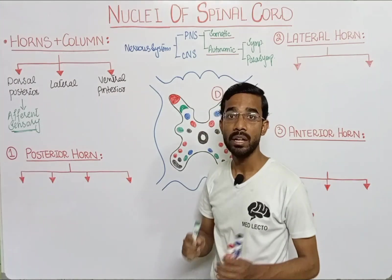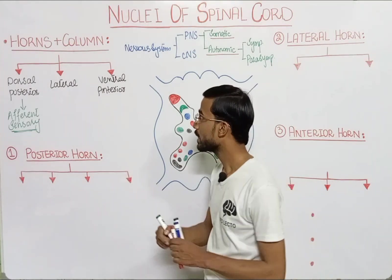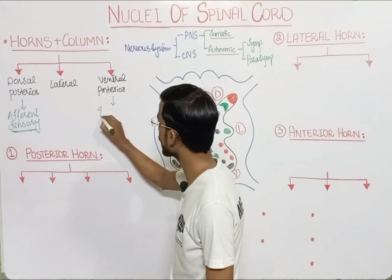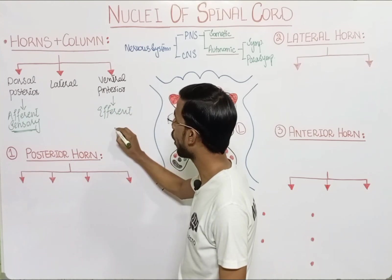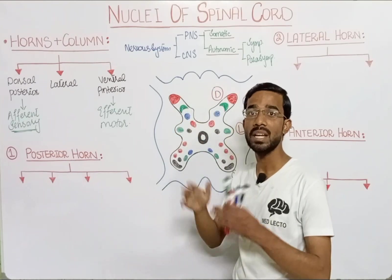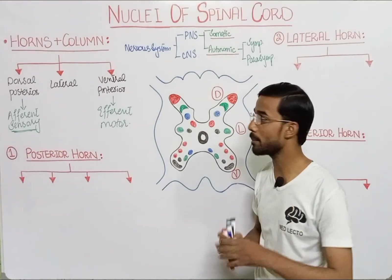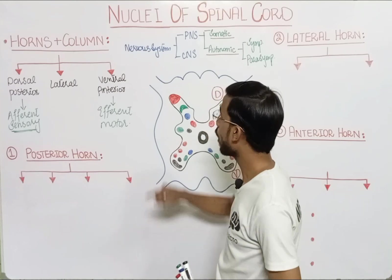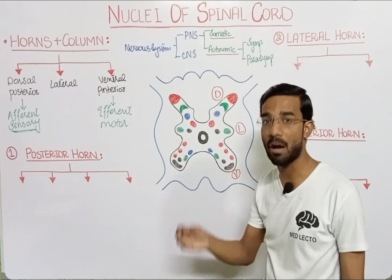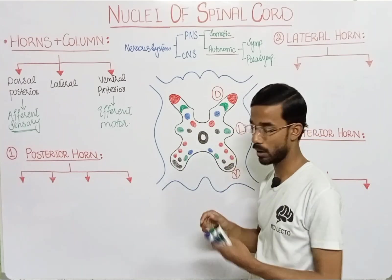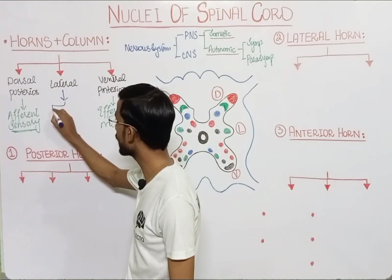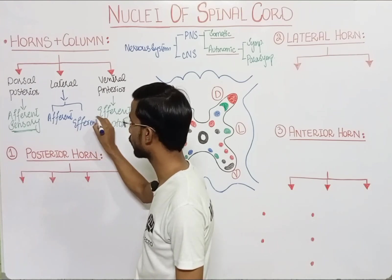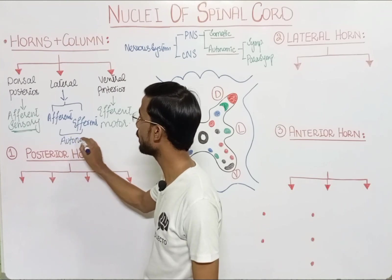The efferent pathway of the somatic nervous system carries messages away from the central nervous system via the ventral or anterior horn — this is the motor pathway. The dorsal and ventral horns are for the somatic nervous system, which is voluntary in nature. For the autonomic nervous system, which is involuntary, the lateral horn is involved, and it also has both afferent and efferent pathways.